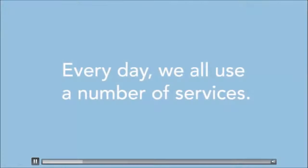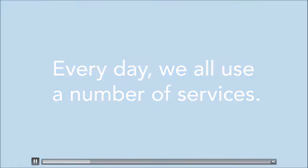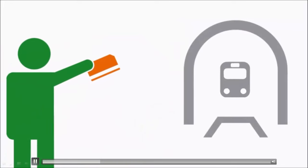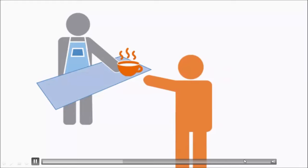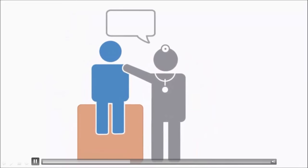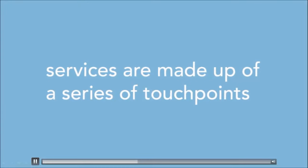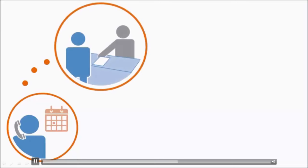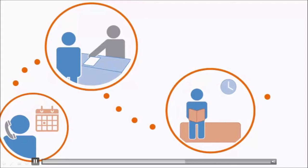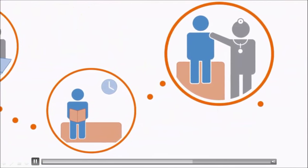Every day we all use a number of services: we do our banking online, we take public transit, we visit museums, we get coffee at our neighbourhood cafe, and we go to the doctor's office. These services are made up of one or more touch points — points of interaction involving a user need in a specific space and time. For example, a visit to the doctor's office can be made up of: scheduling an appointment, checking in at the front desk, sitting in the waiting room, seeing the doctor, and receiving a follow-up note.